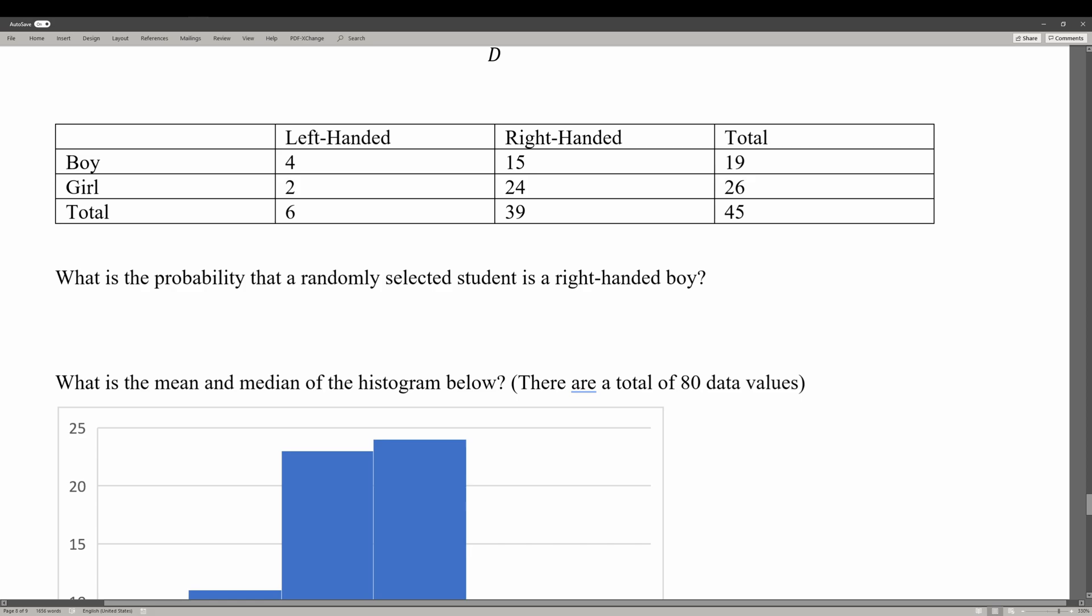This is a probability question, and what we're supposed to do is calculate the probability that a randomly selected student is a right-handed boy. We have a total of 45 students, and we also have 15 right-handed boys. So we put 15 over 45, because the number of right-handed boys is 15 over the total number of students, which is 45. So 15 over 45, and that's one-third.